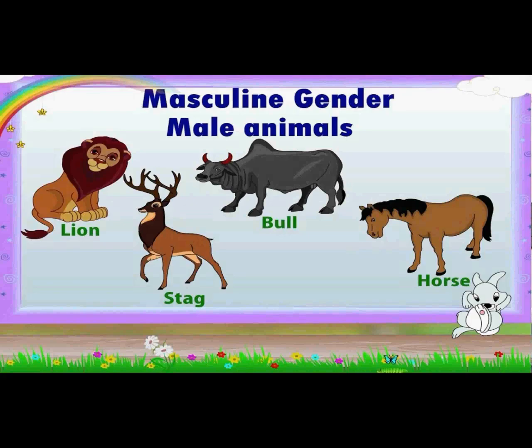Now can you see the images? All these belong to the masculine gender. A horse belongs to the masculine gender. Bull belongs to masculine gender. Stag belongs to masculine gender. And lion — the king of the jungle — he is also a male.